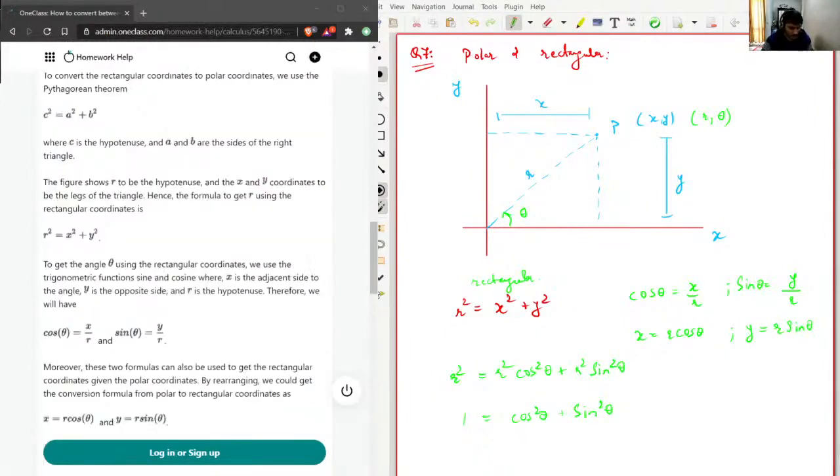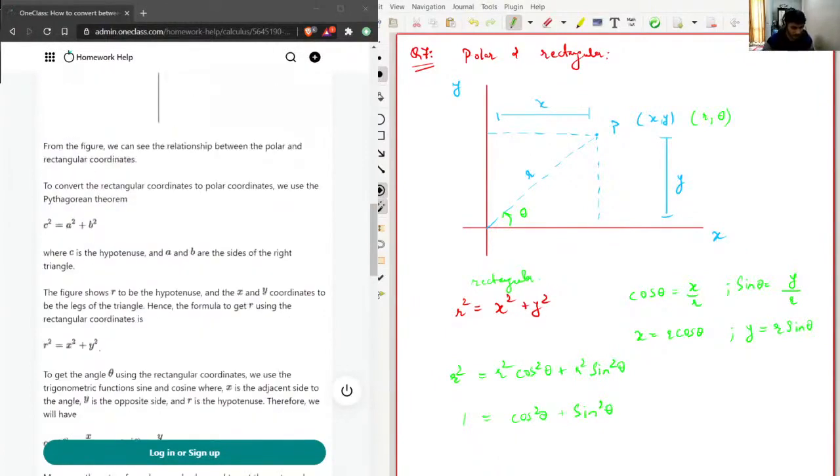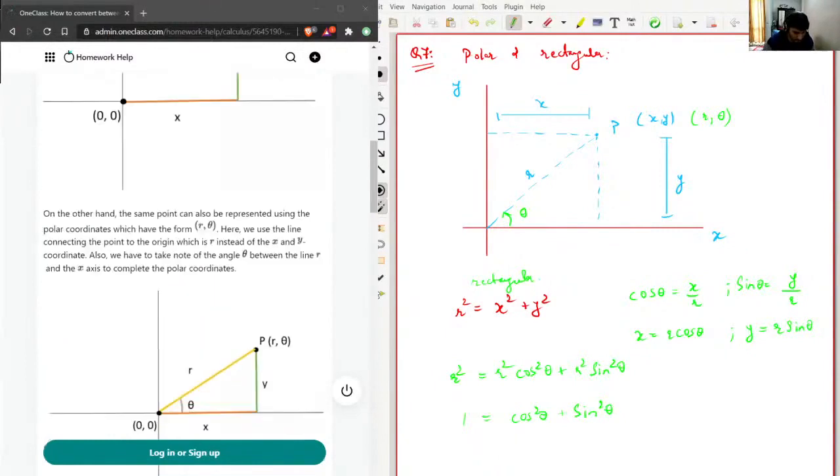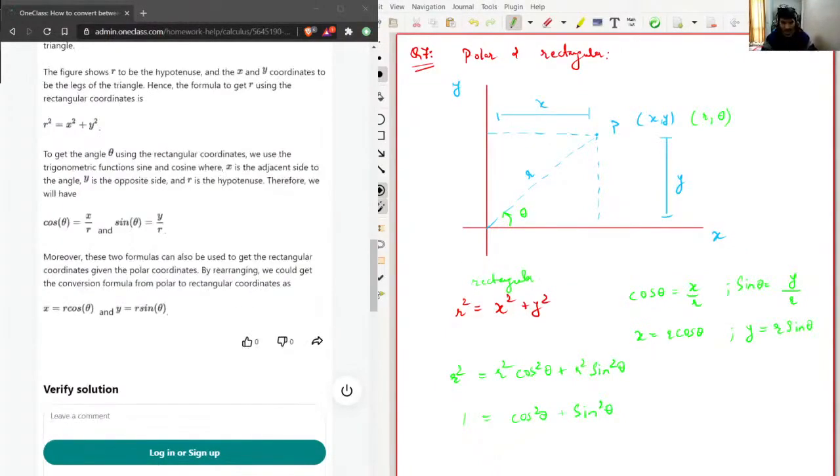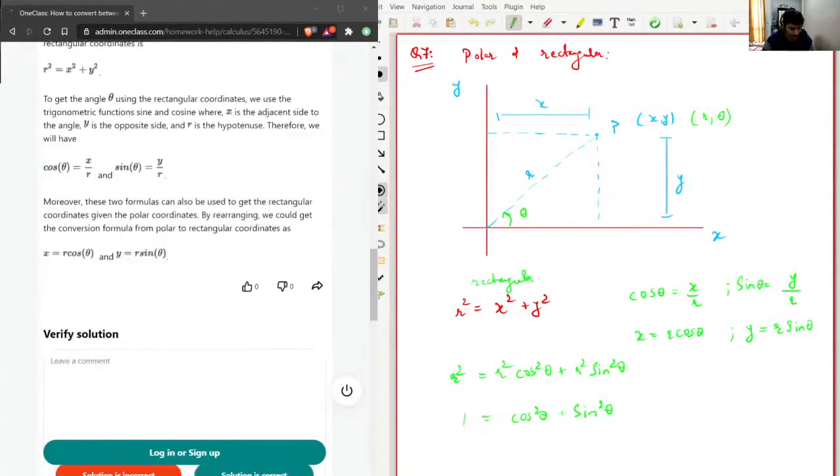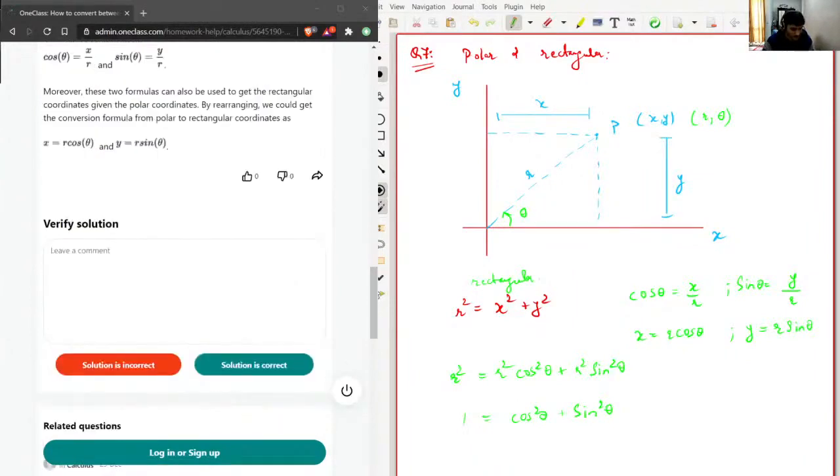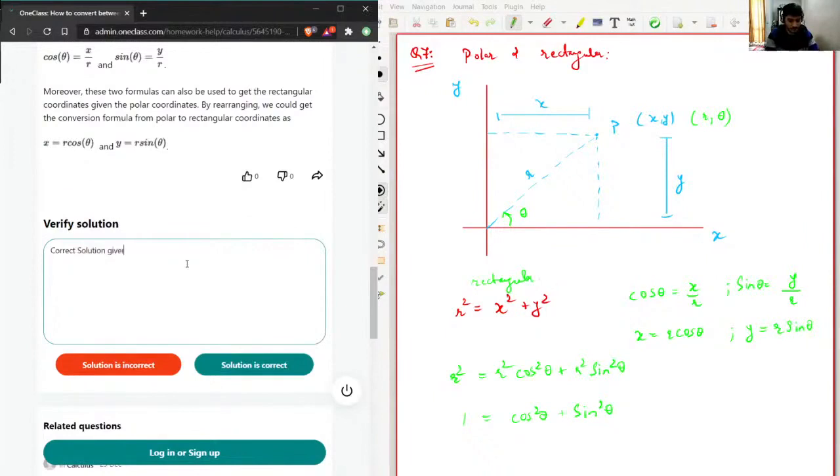So I think that is pretty much all. All these statements are just the same which I already told you. So in this way, we convert polar coordinate system to rectangular and rectangular coordinate system to polar coordinate system. That is pretty much all, and I'll just write the correct solution given here.